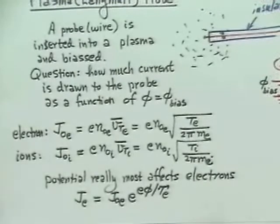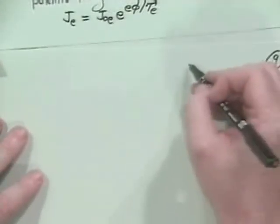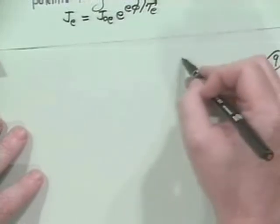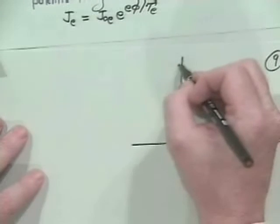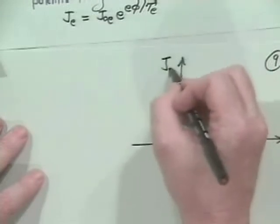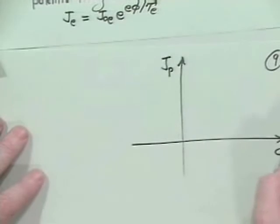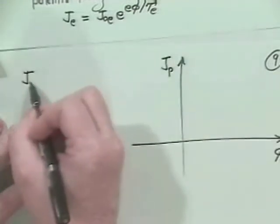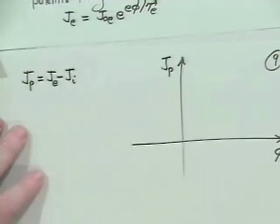Okay, so now, what do we kind of guess will happen as we apply the potential? So, what we want is what's called a probe characteristic, which is you plot the current to the probe as a function of potential. And the current to the probe is equal to Je minus Ji.